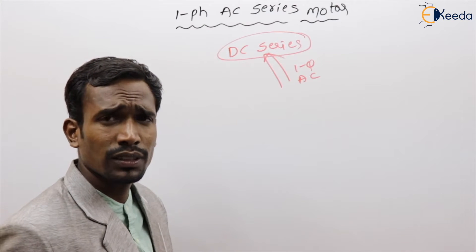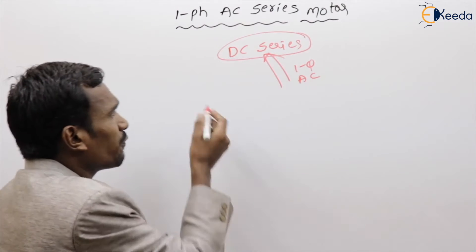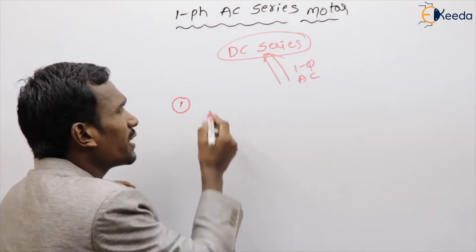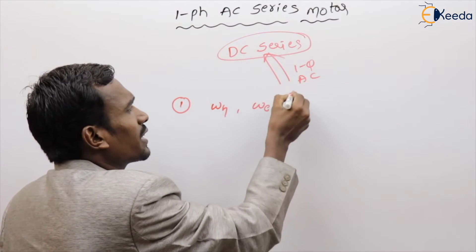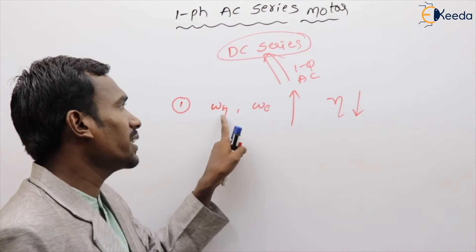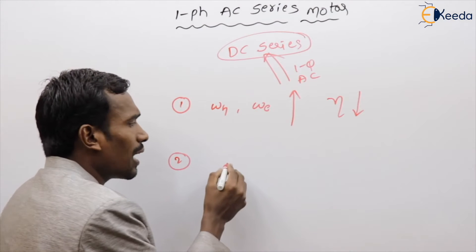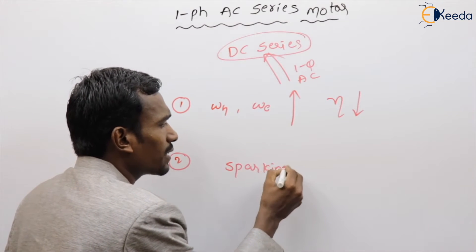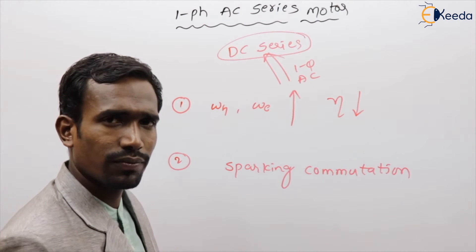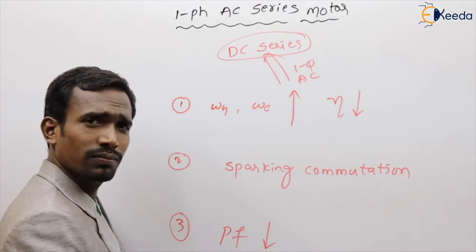When you give single-phase AC supply to a DC series motor, there are difficulties. The first difficulty is that hysteresis and eddy current losses increase, and efficiency decreases. The second difficulty is commutation sparking.